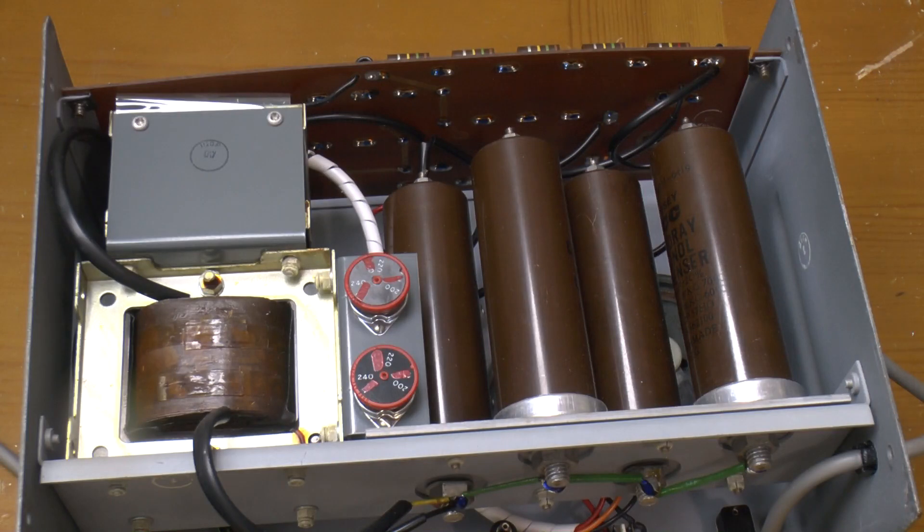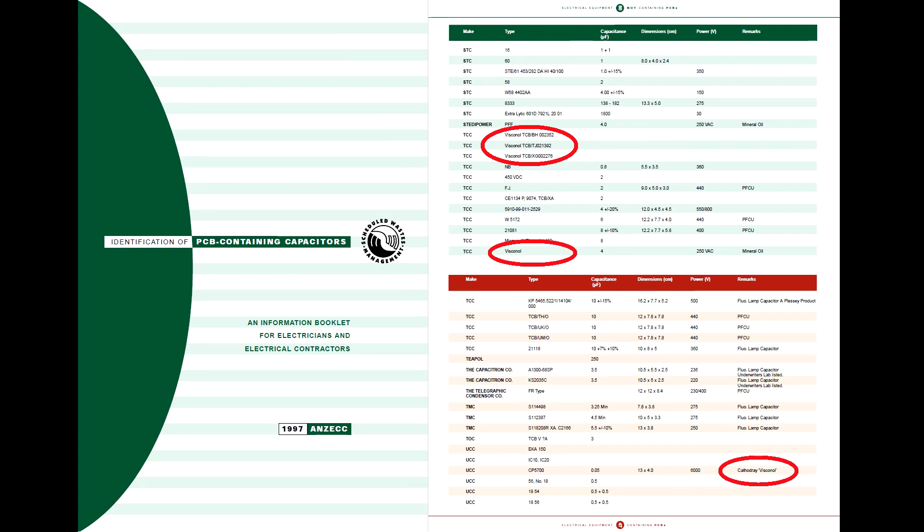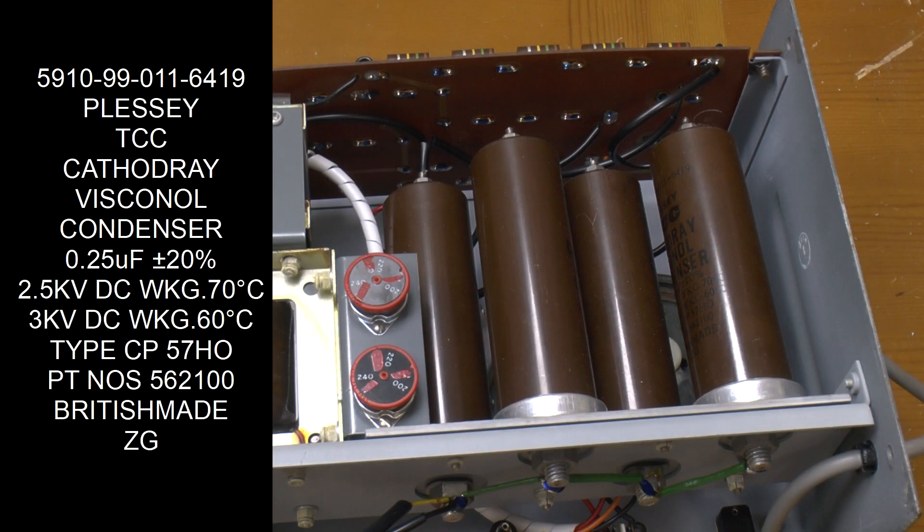Now as it's an oil and paper capacitor, obviously there's old oil inside but is it PCB oil? Well it's kind of hard to tell. There's a lot of conflicting evidence out there. The United Nations Environment Programme don't list viscanol as a PCB mixture. ANZEC have produced a list of various capacitors and have four viscanol caps in their green list of PCB free capacitors. However they do have the CP5700 in their red list of PCB containing capacitors. The caps in this unit are CP57HO which is the same family. At least they're not leaking and I don't intend chopping them open. As long as they don't go bang they should be fine I think.